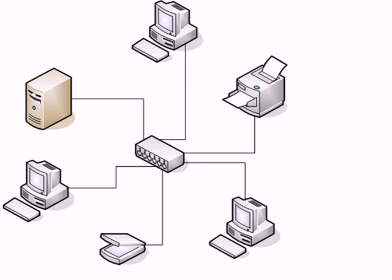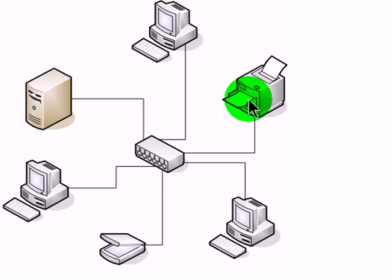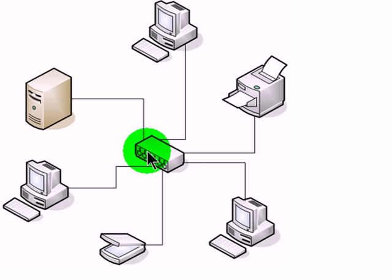Do you know what the internet is? It's really just a bunch of computer networks connected together. A computer network is any two computers that are connected together. This picture here shows a computer network — there are multiple computers, a server, and other devices like printers and scanners, all connected together with some central device: a hub, router, or sometimes a switch.